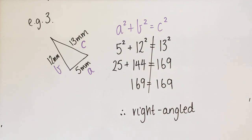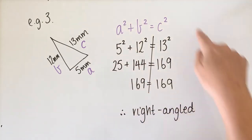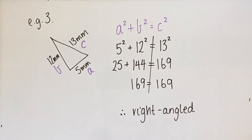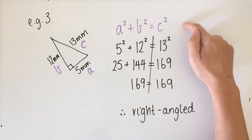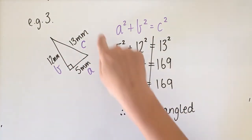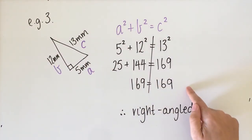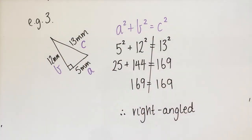That is how you prove whether a triangle is right-angled or not. Looking back at our learning intention and success criteria — to use the formula to prove whether a triangle is right-angled or not — we've demonstrated that successfully. The success criteria was to know the formula, be able to label the triangle, substitute the values, and find whether it was right-angled or not.